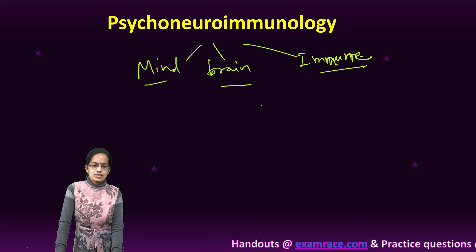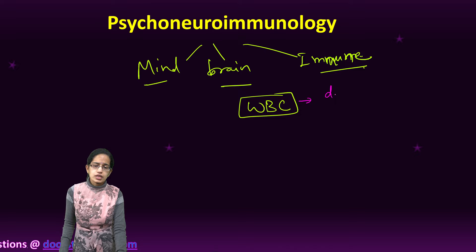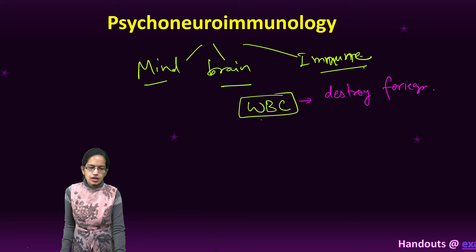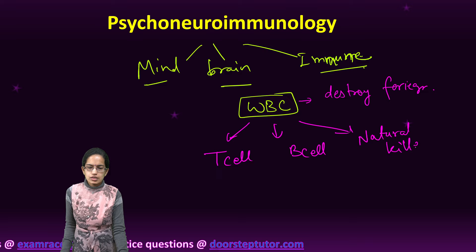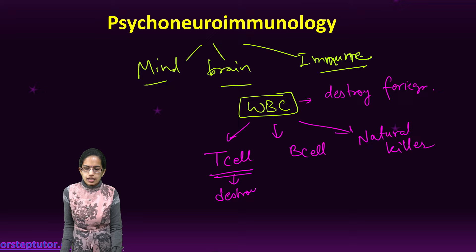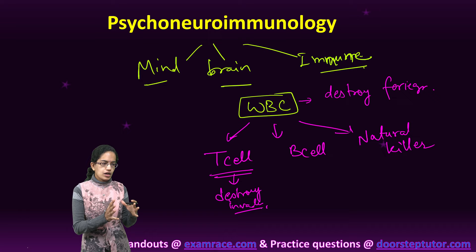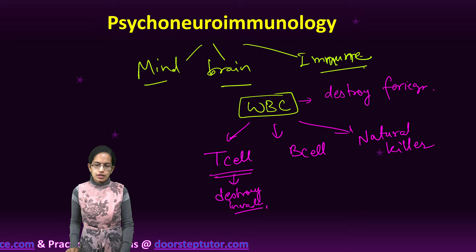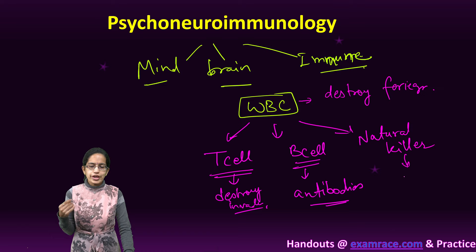In our body we have WBCs, which are responsible for destroying any foreign body that enters our system. WBC includes three types of cells: T cells, B cells, and natural killer cells. B cells destroy the invaders, increase immunological activity, and produce antibodies to fight infection. Natural killer cells try to destroy all kinds of viruses and tumors that exist in or can harm the body.